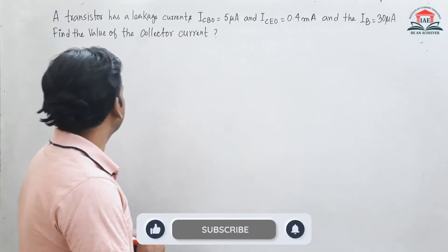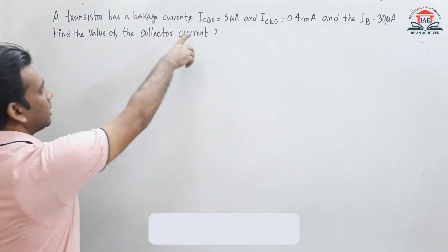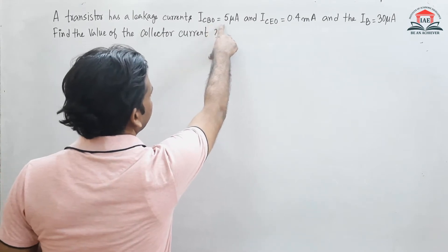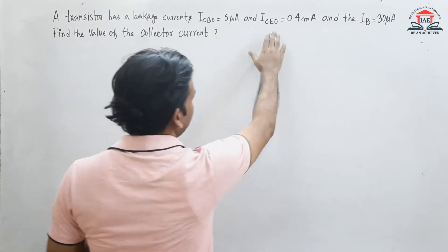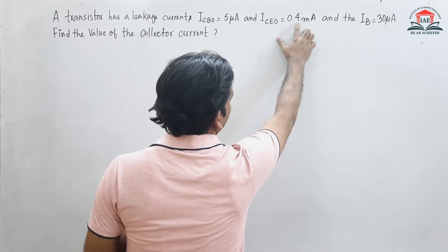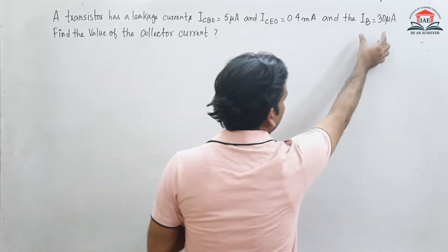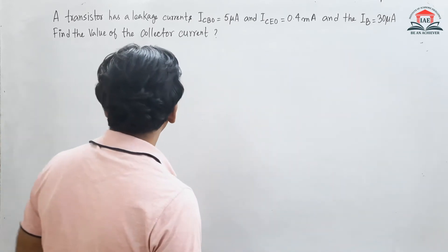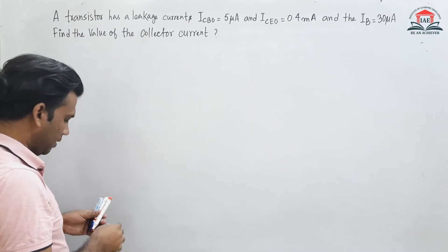In this numerical, a transistor has a leakage current ICBO equals 5 microampere, ICEO equals 0.4 milliampere, and the base current IB is 30 microampere. Find the value of the collector current.